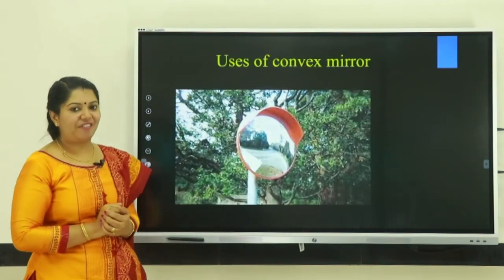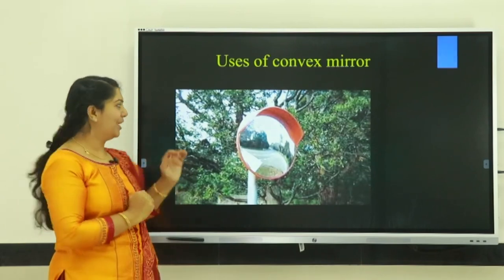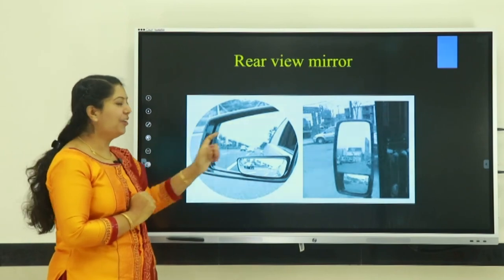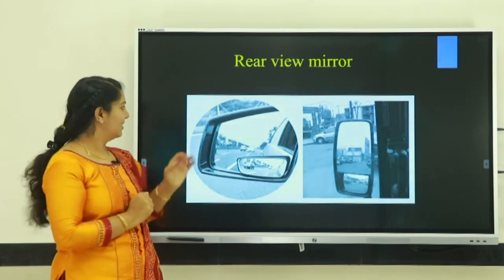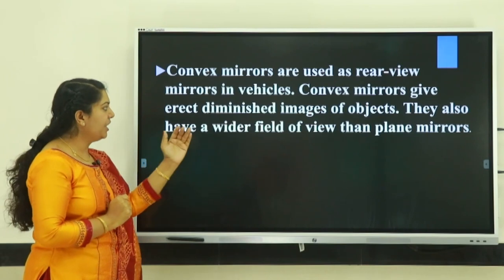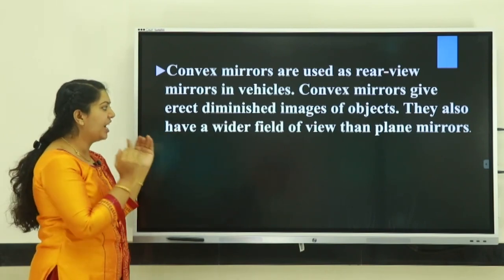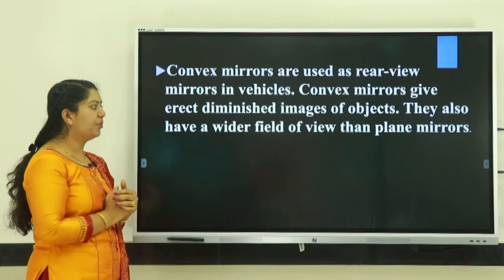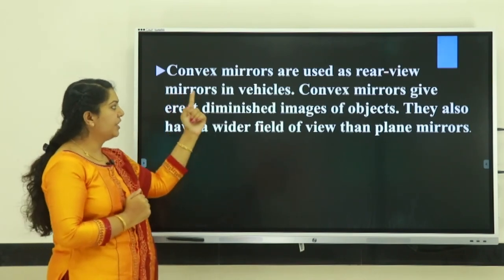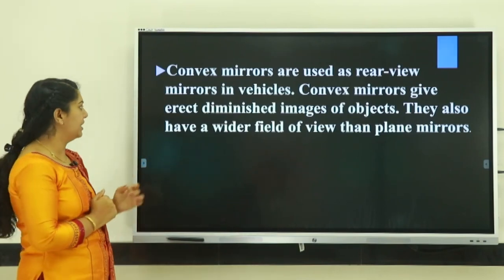What are the uses of convex mirror? Convex mirror is used as a rear view mirror of vehicles. Convex mirrors give erect, diminished images of objects and also have a wider field of view than plane mirrors. That is why convex mirrors are used as rear view mirrors in vehicles.